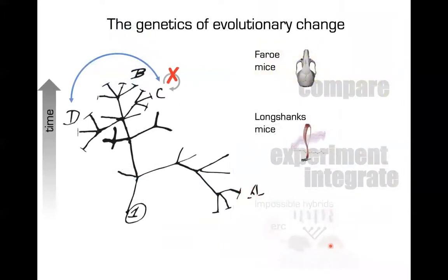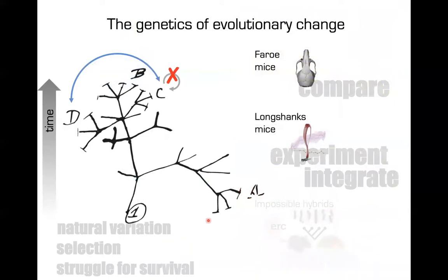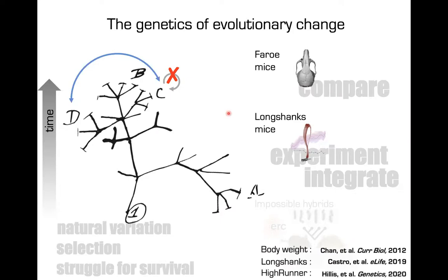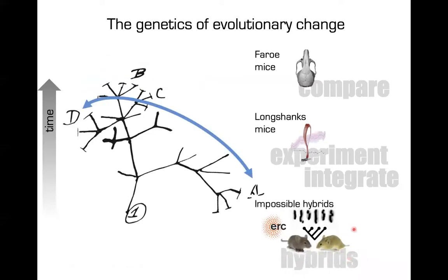That was our second section — showcasing how we can catch evolution in action, demonstrating major themes in evolutionary theory: dependence on natural variation, directional selection, and real struggle for survival where only 10% of mice get to breed. In the last section, I'm going to tell you about so-called impossible hybrids. Darwin himself was very interested in hybrids, especially hybrid sterility and incompatibility. Our institute also has interesting work using hybrids in zebrafish and in hybrid necrosis in Arabidopsis.